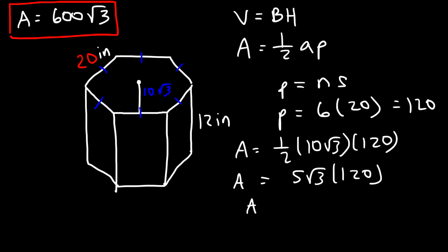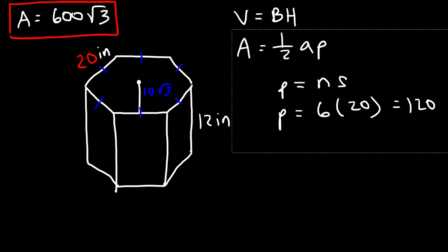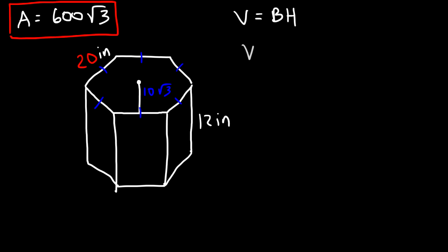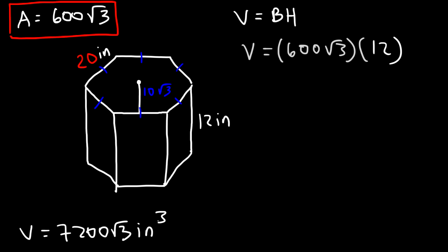Now we can calculate the volume of the prism. It's the area of the base, which is 600 square root 3, times the height of the prism, which is 12 inches. 600 times 12 is 7200, so the volume is 7200 square root 3 cubic inches.